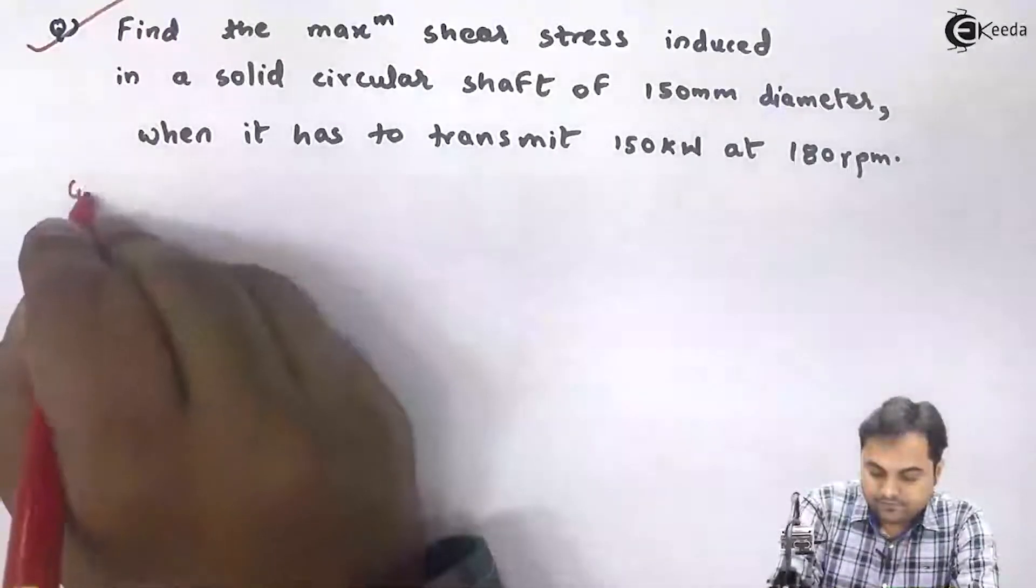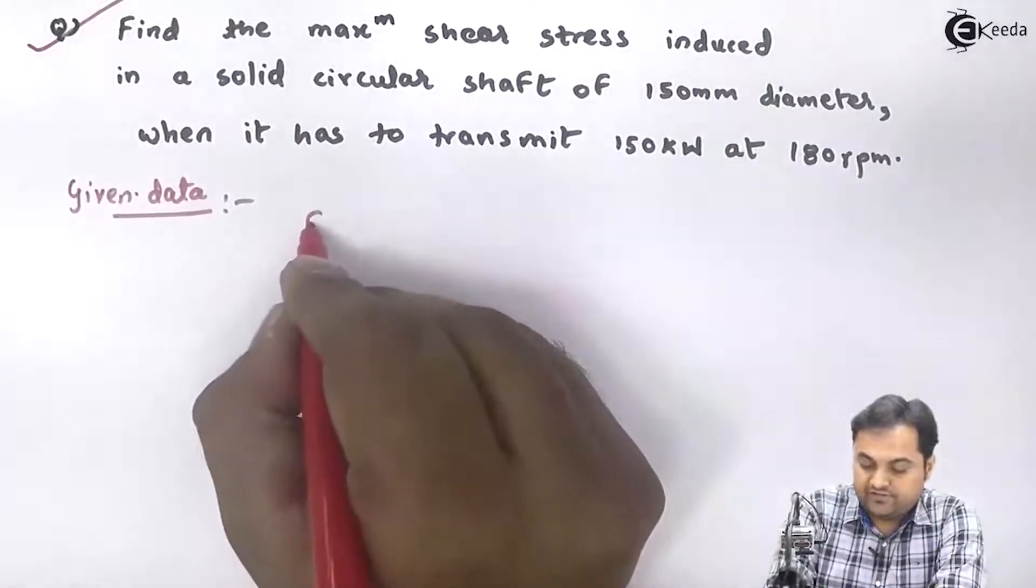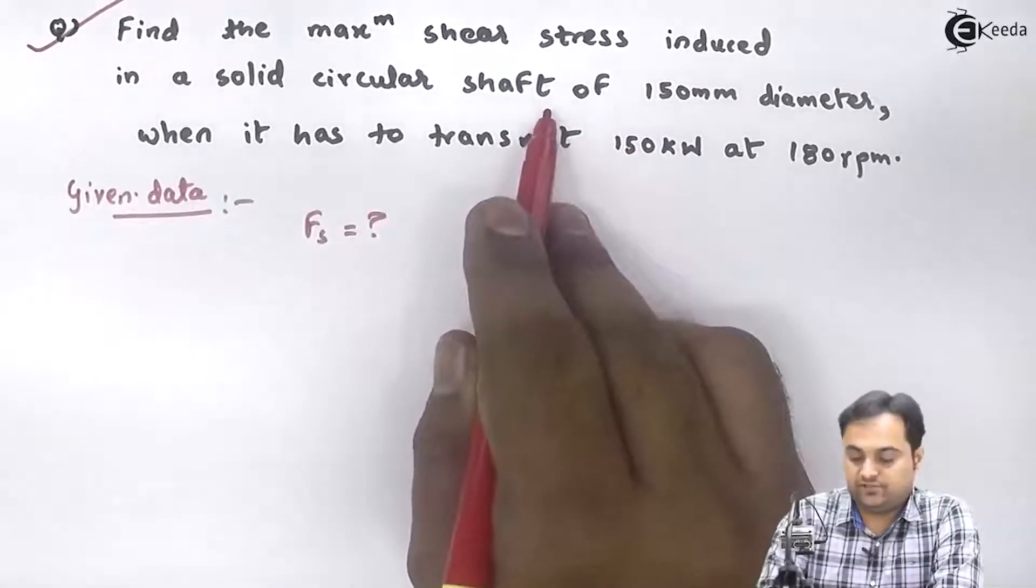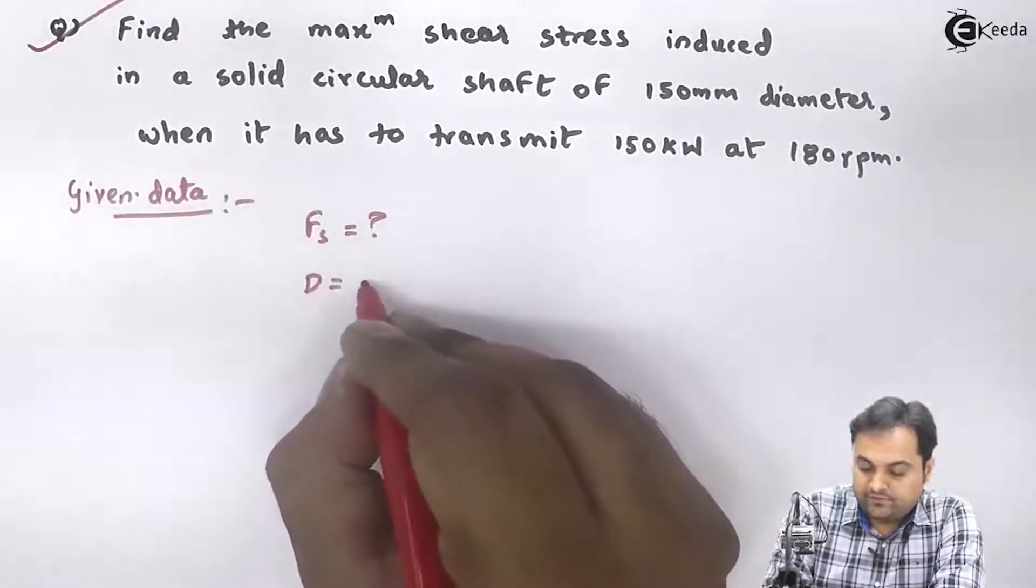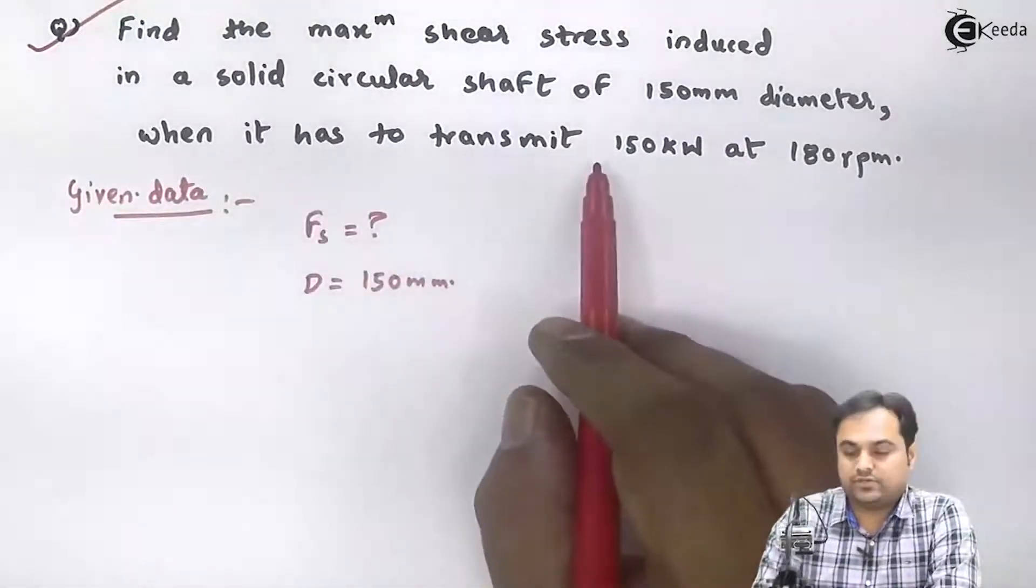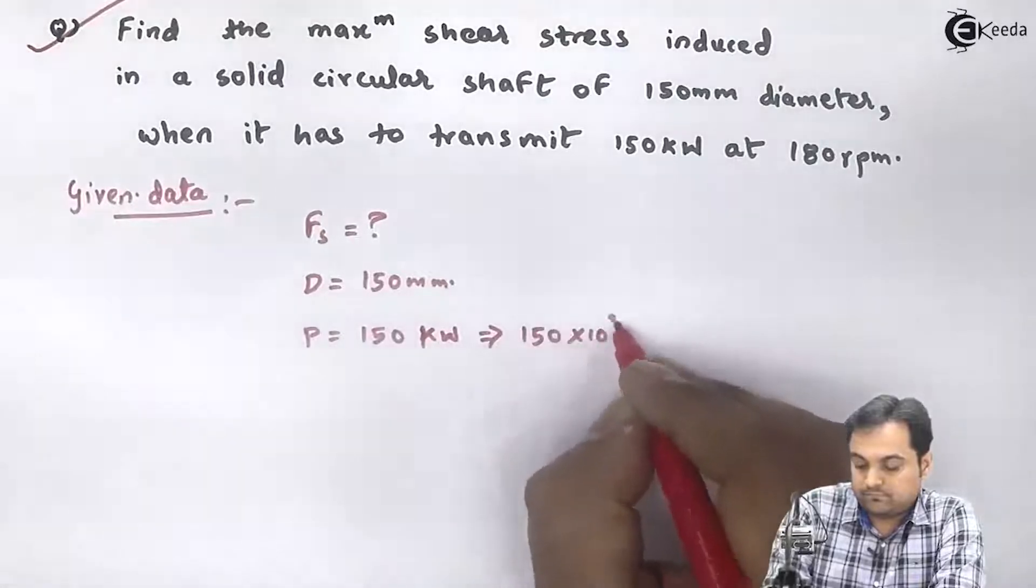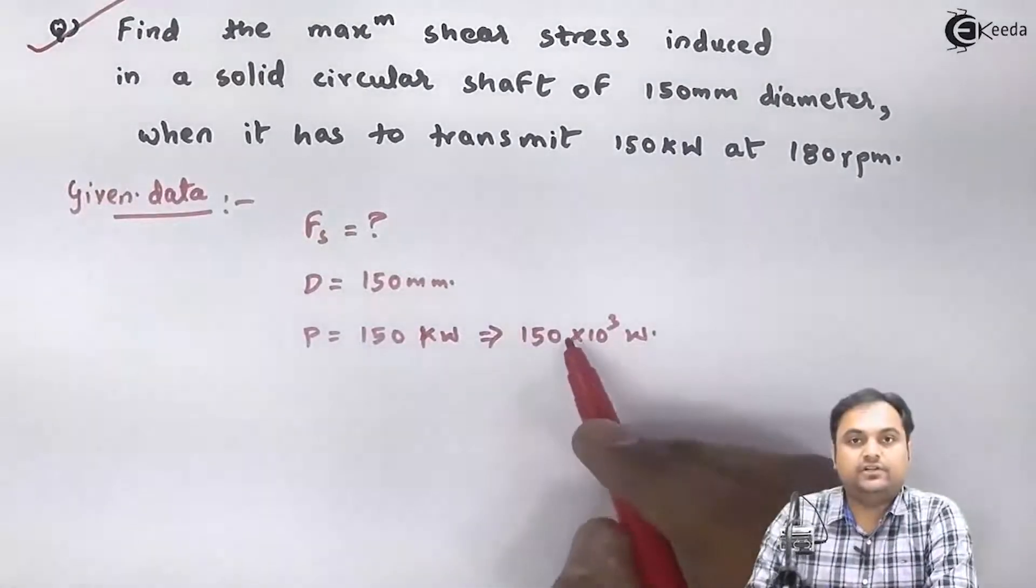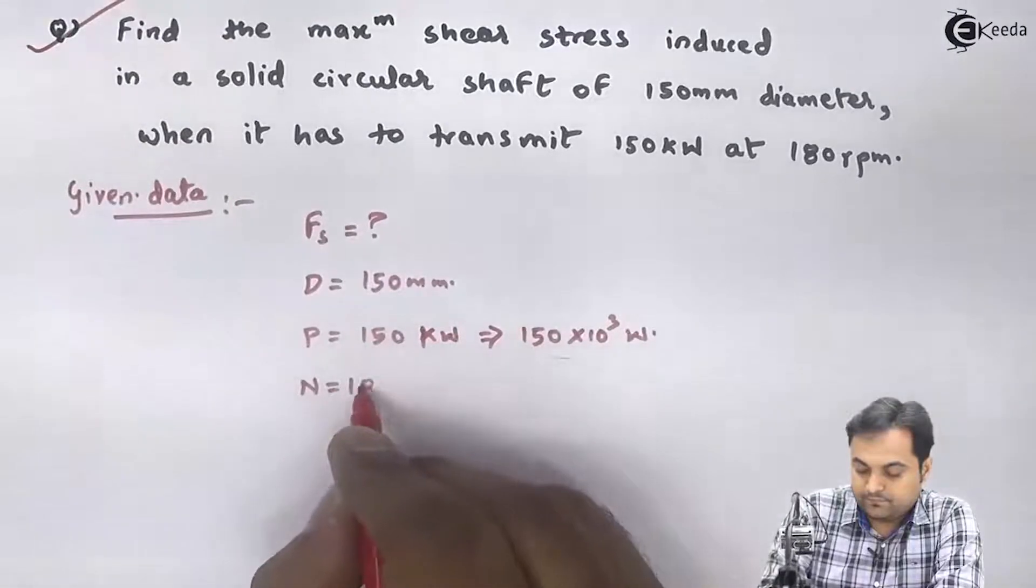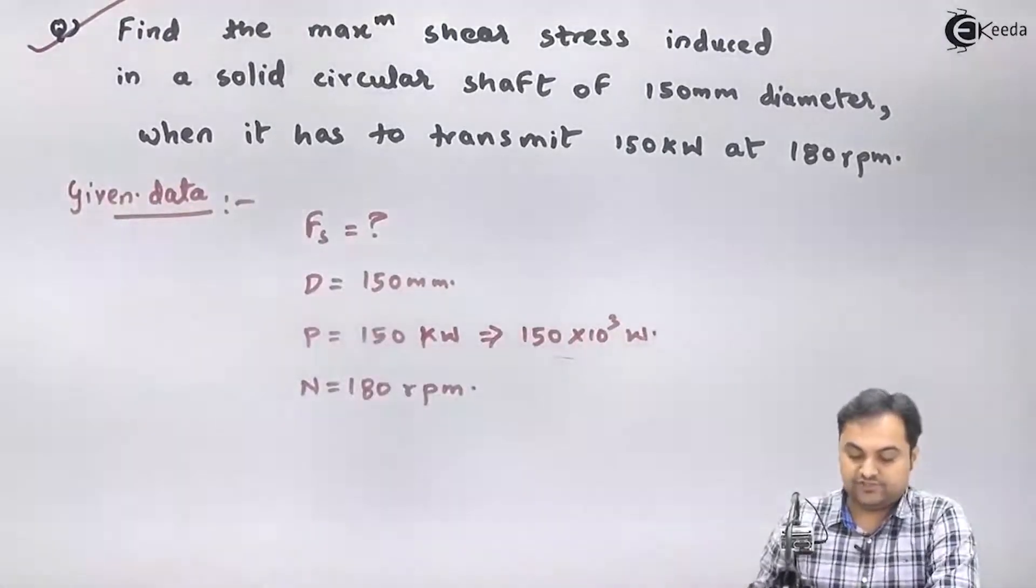Find the maximum shear stress, so FS is what we have to calculate, induced in a solid circular shaft of 150 mm diameter. The diameter of the solid shaft is given as 150 mm. When it has to transmit 150 kilowatts power, if I convert it I will get it as 150 into 10 raise to 3 watts at 180 rpm speed. The question is we have to calculate shear stress.